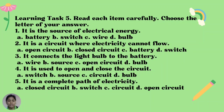Number 3: It connects the light bulb to the battery. A, wire; B, source; C, open circuit; D, bulb. Number 4: It is used to open and close the circuit. A, switch; B, source; C, circuit; D, bulb. Number 5: It is a complete path of electricity. A, closed circuit; B, switch; C, circuit; D, open circuit.